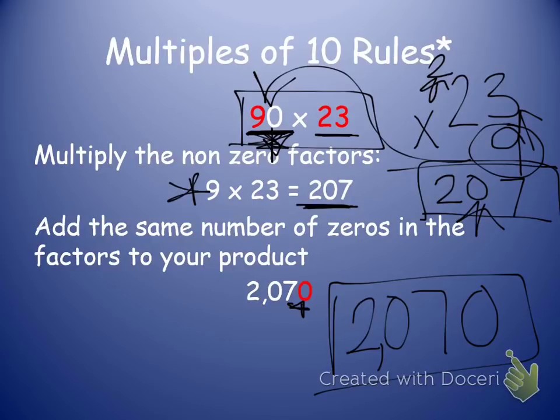My final answer should be 2,070 guppies to make sure that I label everything, because it is a word problem and those numbers have meaning.